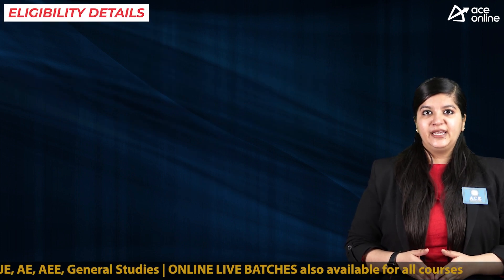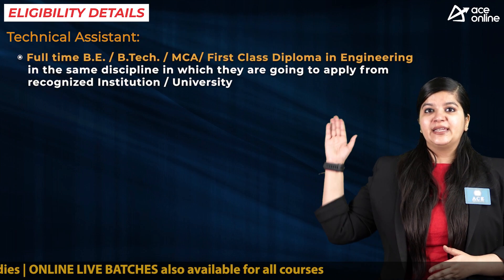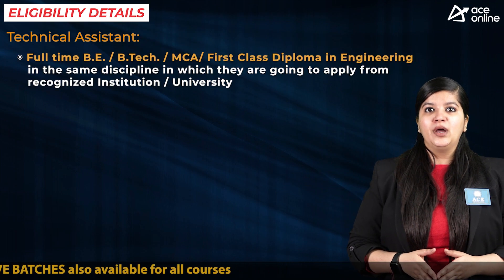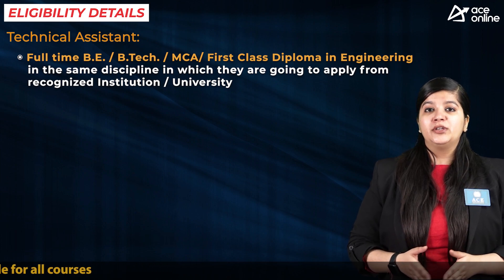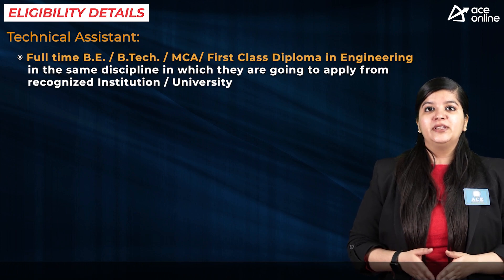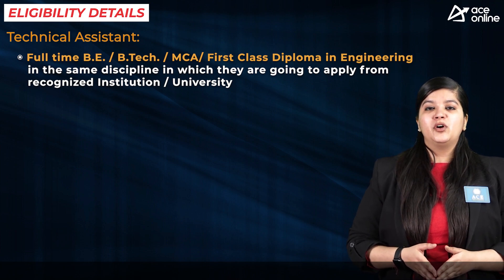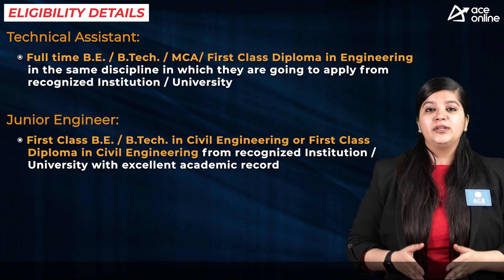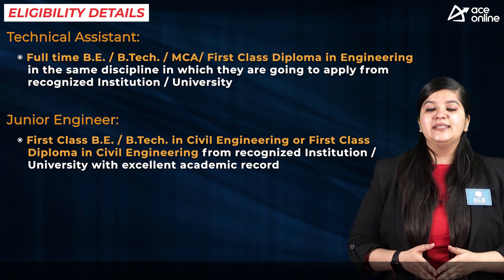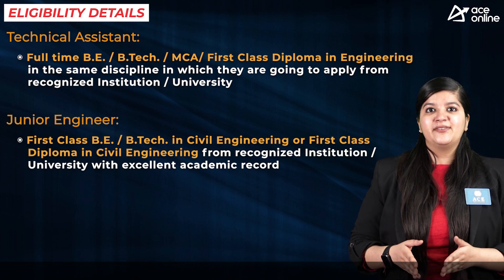Now let's look at the essential educational qualification and eligibility criteria. For the post of Technical Assistant, candidates need to have BE, B.Tech, MCA, or a Diploma in Engineering with good academic records. For the post of Junior Engineer, candidates need to have BE, B.Tech, or a Diploma in Civil Engineering in the concerned discipline.